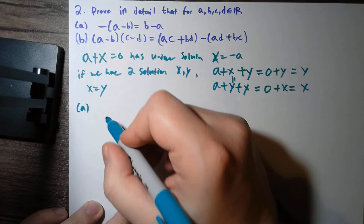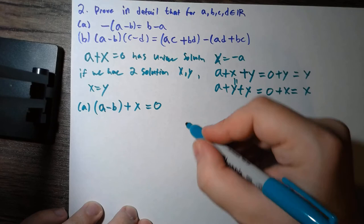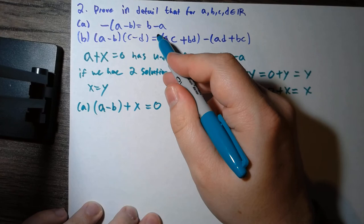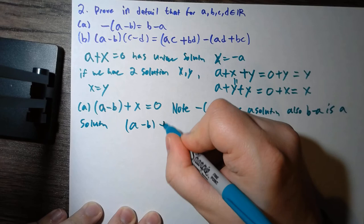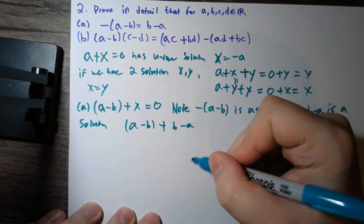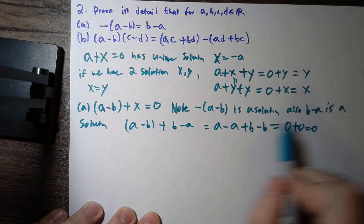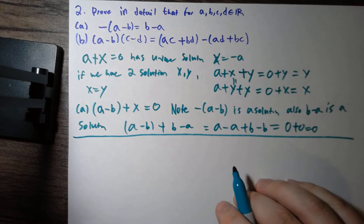To prove part a, we consider the equation a minus b plus x equals zero. We observe that negative a minus b is a solution, but also I claim that b minus a is a solution. This is because a minus b plus b minus a equals, using commutativity, a minus a plus b minus b, which is zero plus zero, which is zero. So both are solutions to this equation, therefore they have to be the same.